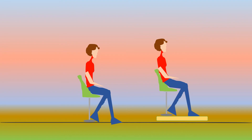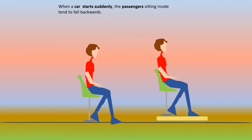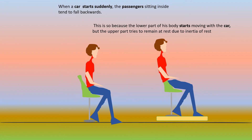Now let us see what happens when a vehicle starts suddenly. The upper part of the body is pushed back. When a car starts suddenly, the passengers sitting inside tend to fall backwards. This is because the lower part of the body starts moving along with the car, but the upper part tries to remain at rest due to inertia of rest. The lower part of the body moves along with the car.